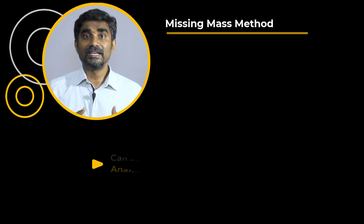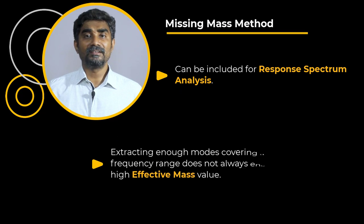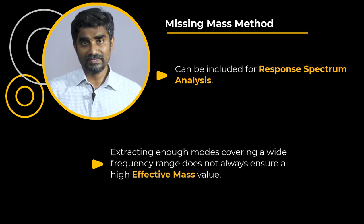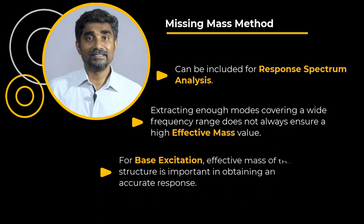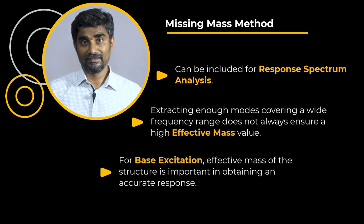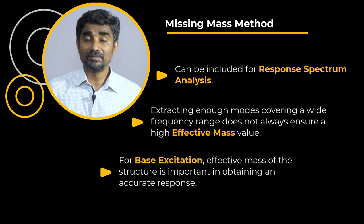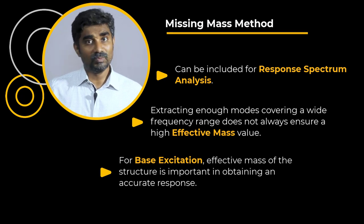The second tool is the missing mass method, which can be included in response spectrum analysis. In some cases, we may extract enough modes to cover a wide frequency range, but the effective mass may still be relatively low. For base excitation in a response spectrum analysis, the effective mass of the structure is important in obtaining an accurate response. Hence, the missing mass method is an efficient technique to include the effect of this missing mass without having to extract a very large number of modes.